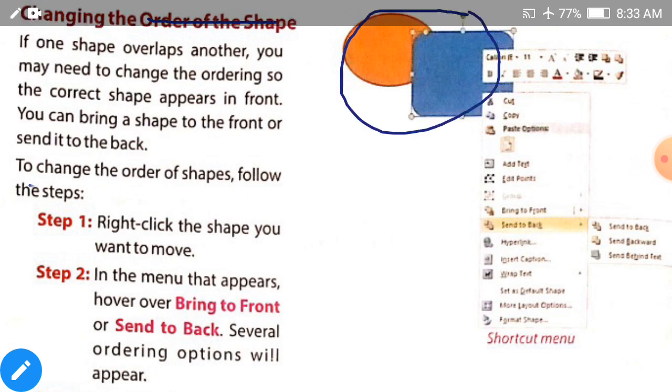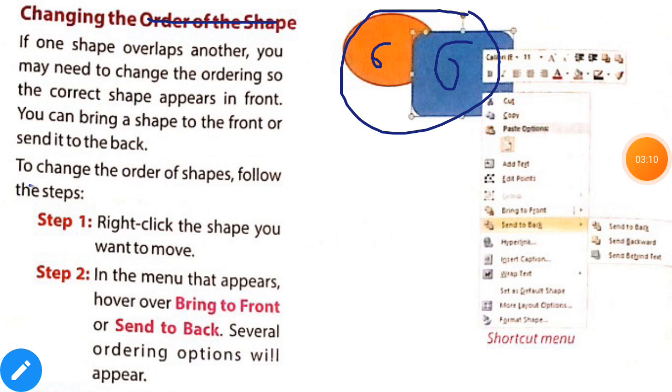There are two shapes here. If you want to make the green first and the green visible also, then you want to change the order. If you want to bring the yellow one to the front, then you can bring the shape to the front or send it to the back.